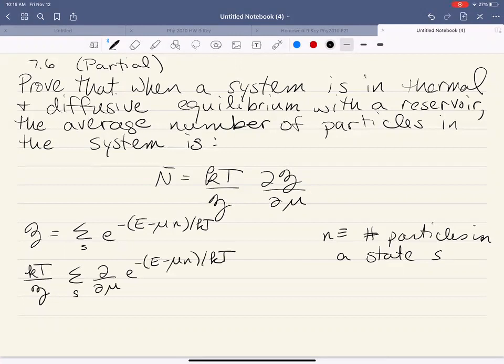So we know how to take the partial derivatives of exponentials. It's actually not too bad. When you take the derivative of an exponential, you get the exponential back again, and then times the derivative of the exponent. So here we're taking the derivative with respect to μ. Now the stuff that's multiplying μ inside of the exponent is n over kT.